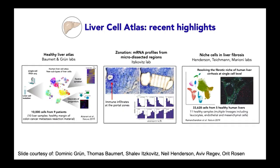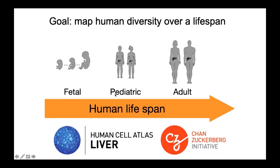In parallel, a number of other groups developed outstanding human liver maps from diverse tissue sources, using different methods and studying different aspects of liver biology. Dominic Grun and Thomas Baumert from Germany mapped healthy human tissue from nine individuals, focusing on stem and progenitor cell biology. Shalev Itzkowicz from the Weizmann Institute used laser capture microdissection to study zonation — expression and function gradients along the sinusoid. And Neil Henderson in the UK examined immune cells in five healthy liver samples. Through HCA meetings, these liver researchers met each other, shared findings, collaborated, and ultimately defined the shared goal of mapping the human liver over a lifespan, covering fetal, pediatric, and adult life stages, creating male and female maps, and exploring how maps differ over ancestry and other factors.